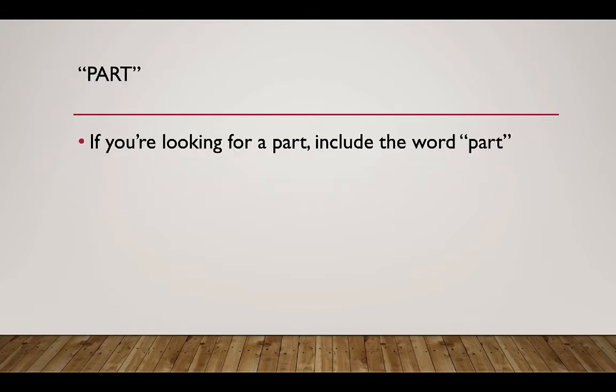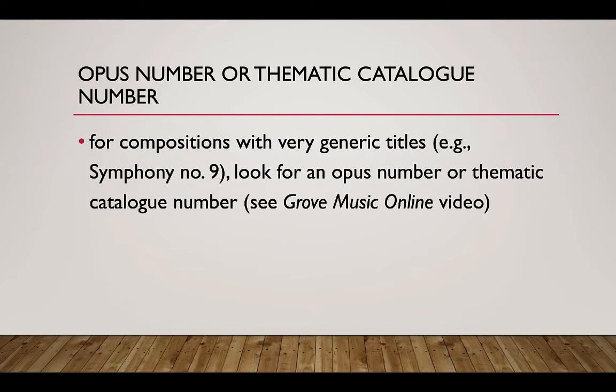The word 'part': if you're looking for a part, include the word 'part' in your search. For compositions with very generic titles — for example, Symphony Number Nine — look for an opus number or thematic catalogue number.